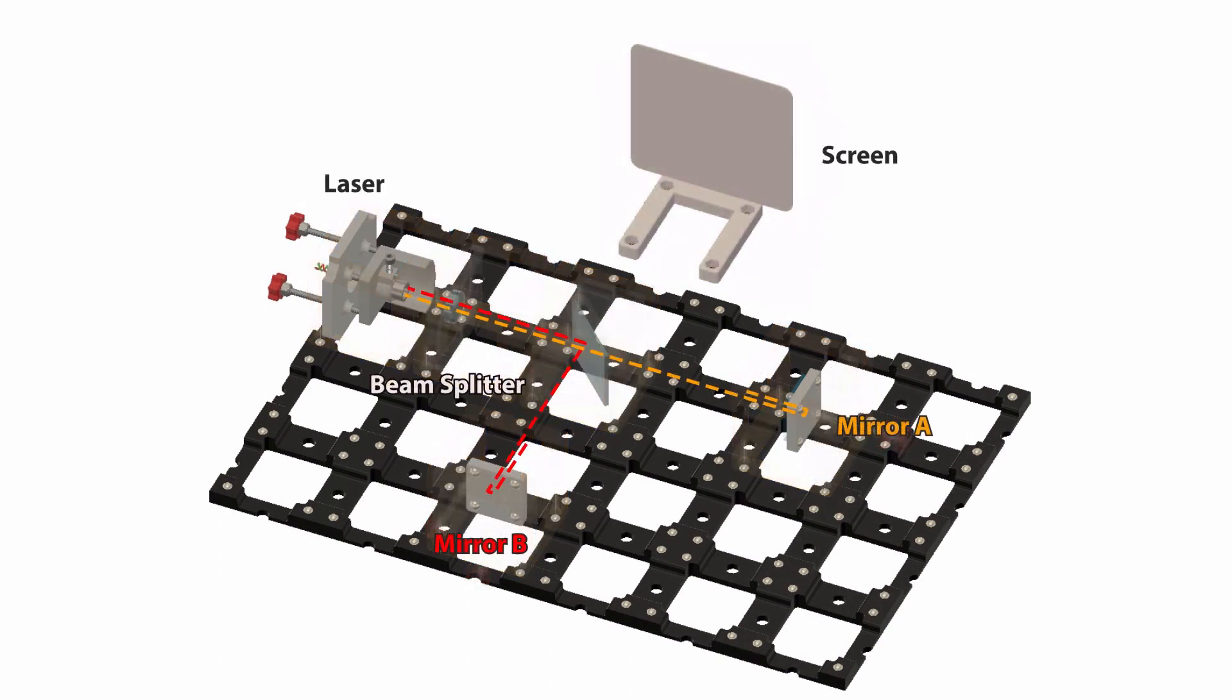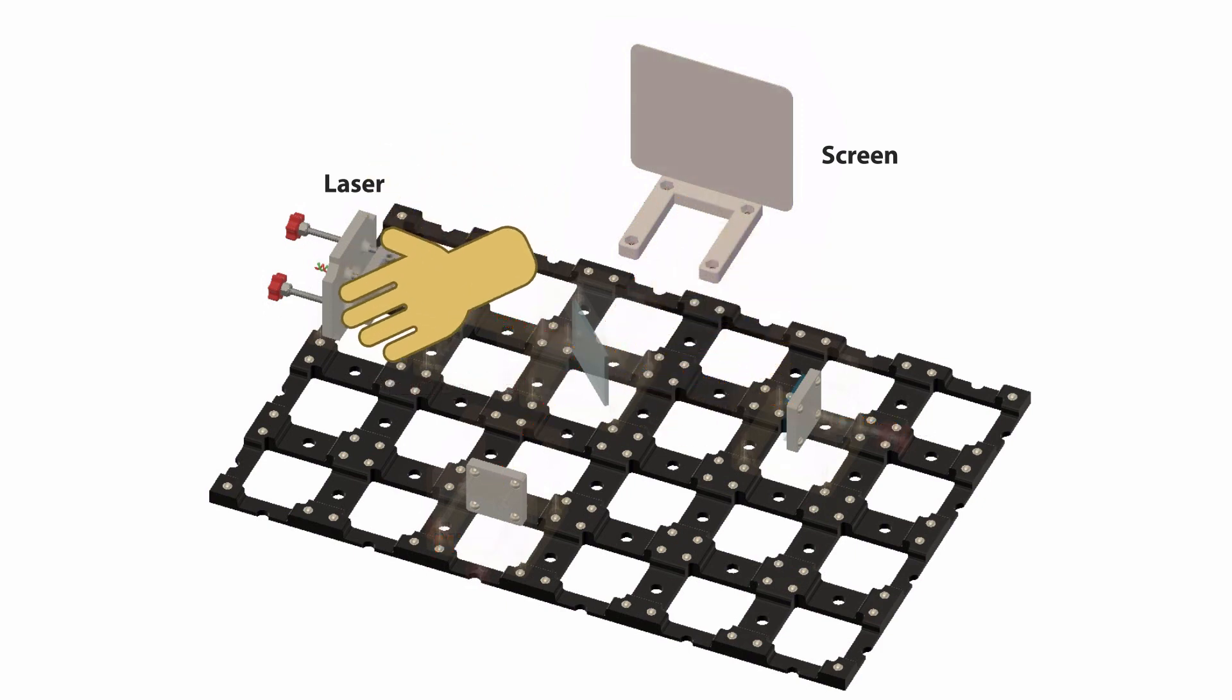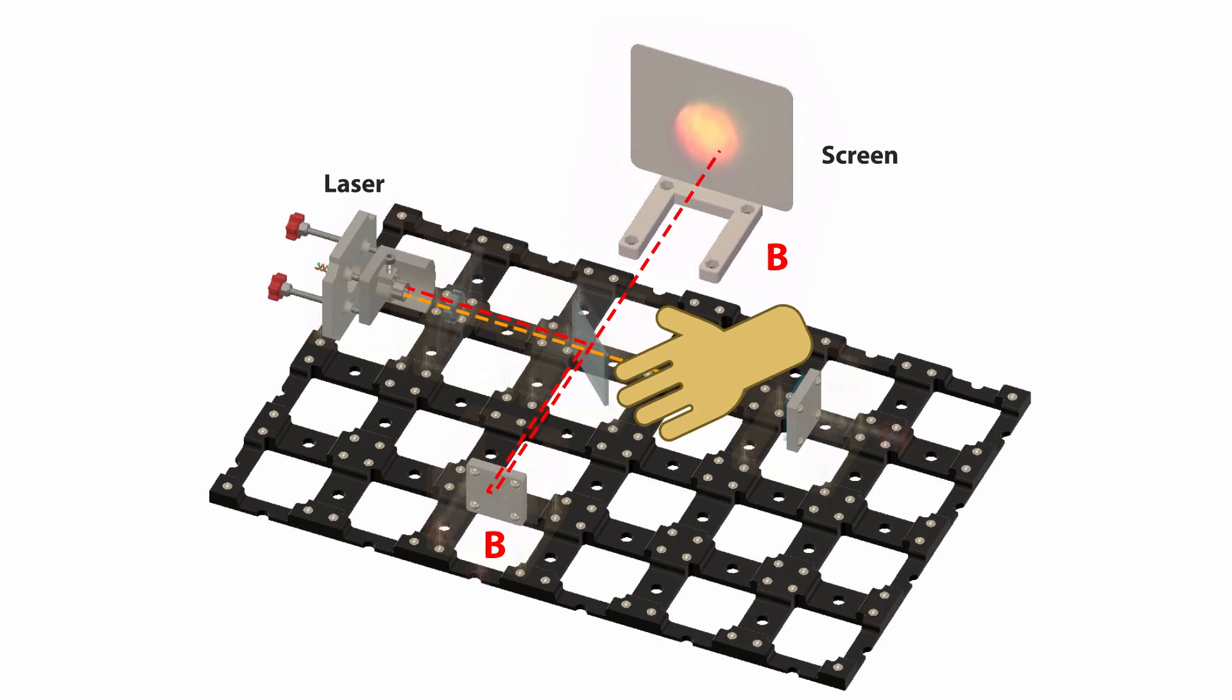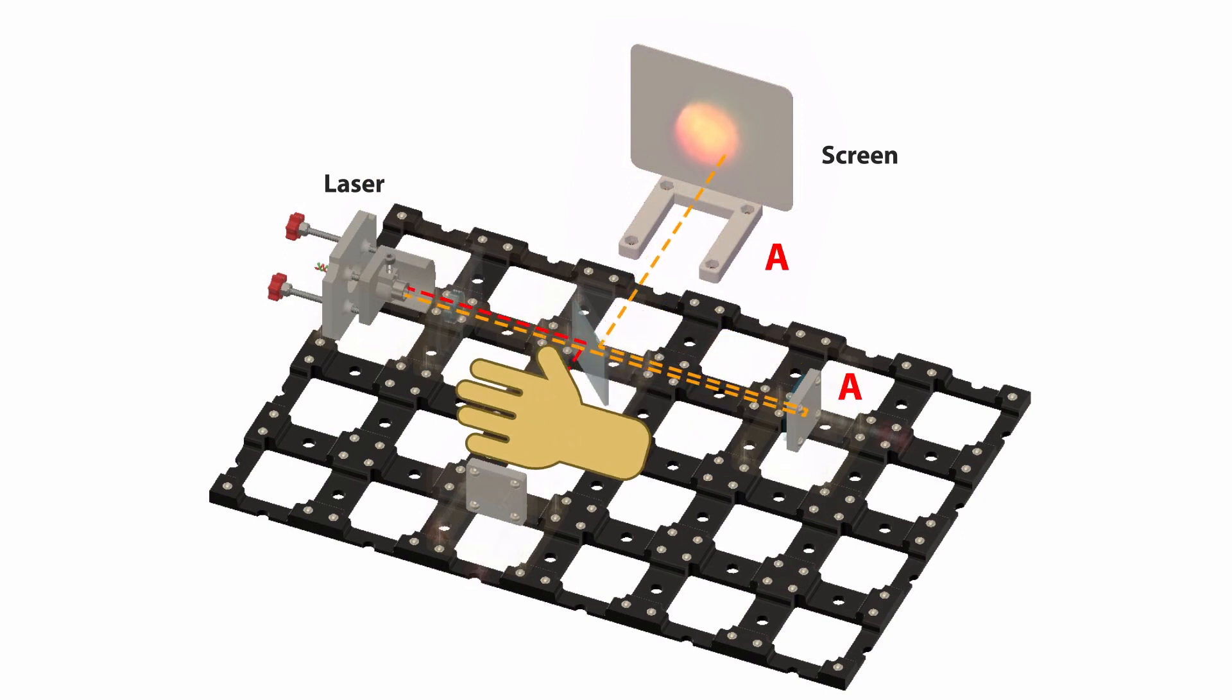If we hold our hands into various points in the laser light, routes are blocked and we can discern the change in the interference pattern. If we block path A and path B, no light falls onto the screen. If we block either path A only or path B only, no interference pattern appears.